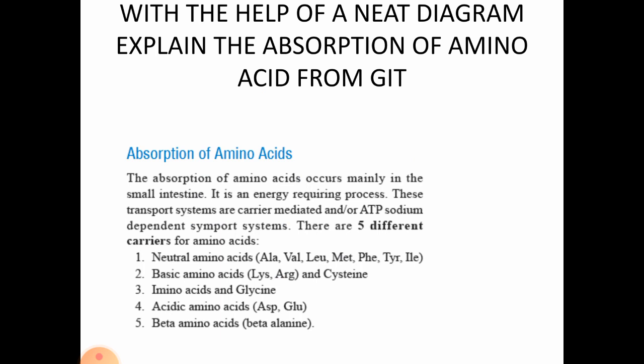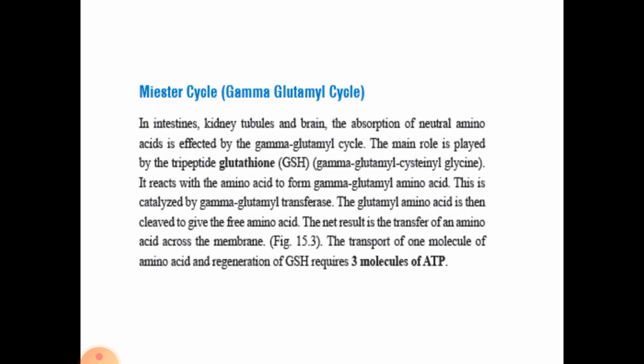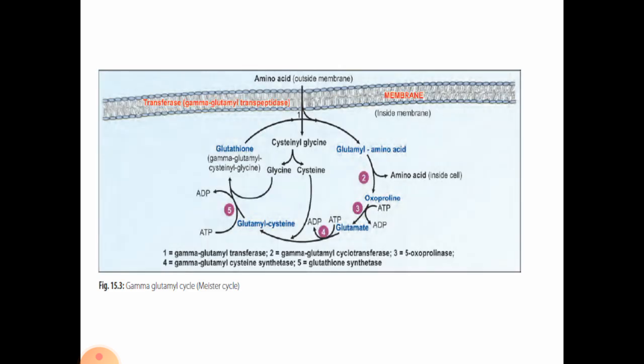Absorption of amino acids occurs mainly in the small intestine and is an energy-requiring process. The transport system is carrier-mediated, ATP and sodium-dependent symport system. There are five different carriers: neutral amino acids, basic amino acids, acidic amino acids, glycine, and beta amino acids. During absorption, you need to explain the Meister cycle, also called the gamma glutamyl cycle, how it acts, and you can draw the diagram of this cycle.